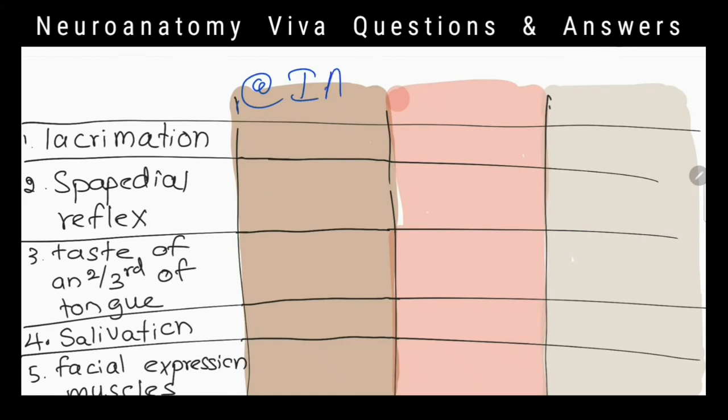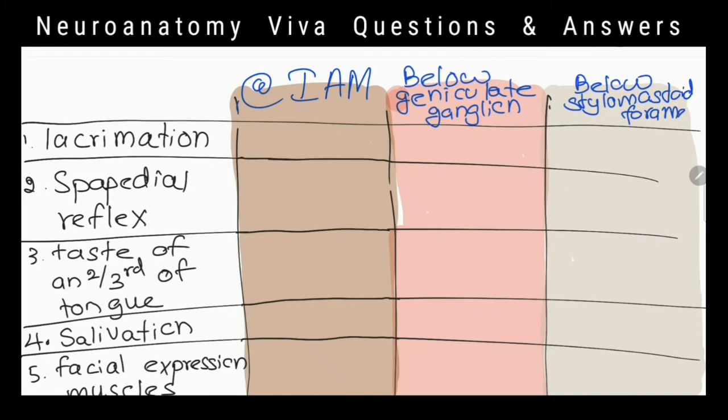I hope you know that signs and symptoms of facial nerve palsy change according to the level of lesion. Can you tell me a few of them? When there is damage below stylomastoid foramen, muscles of facial expressions will be paralyzed. Higher up, when there is damage below the geniculate ganglion,